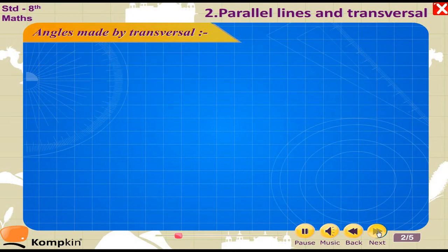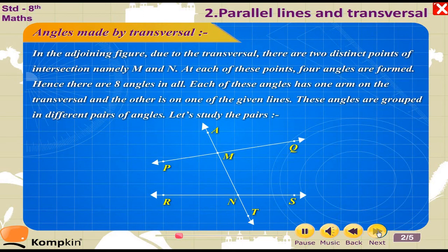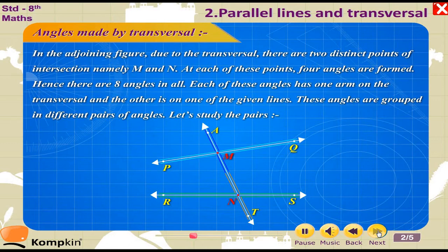Angles made by a transversal. In the adjoining figure, due to the transversal, there are two distinct points of intersection, namely M and N. At each of these points, four angles are formed, giving eight angles in all. Each of these angles has one arm on the transversal and the other arm on one of the given lines. These angles are grouped into different pairs.